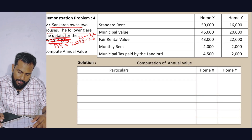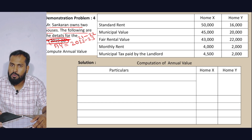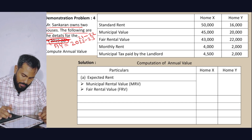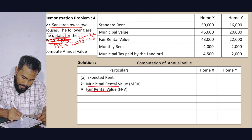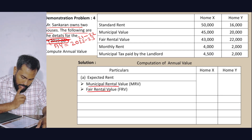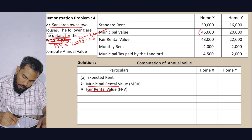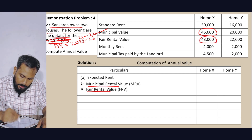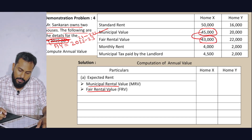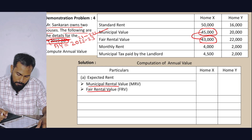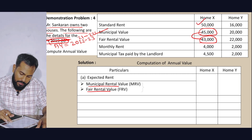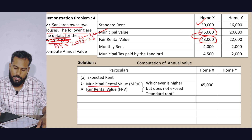Particulars for House X and House Y. Municipal Rental Value for House X is 45,000; Fair Rental Value is 43,000. Whichever is higher is 45,000. There is no standard rent exceeding this, so Expected Rental Value equals 45,000.